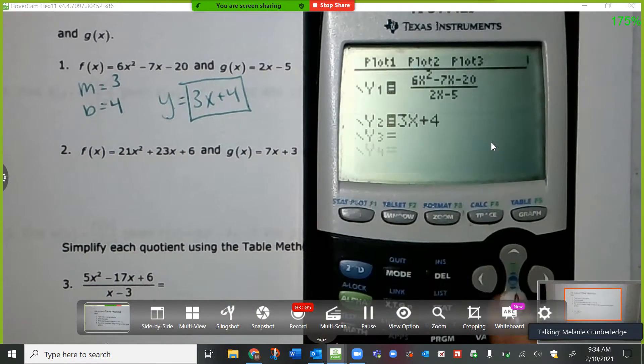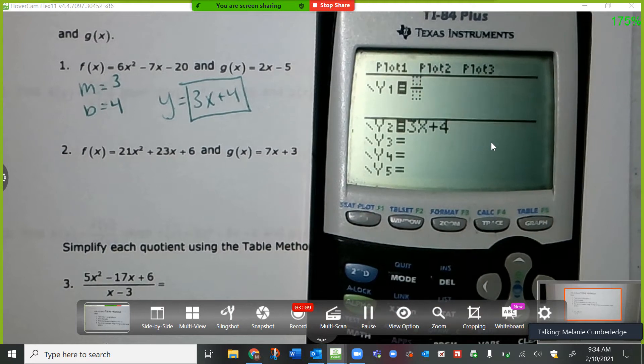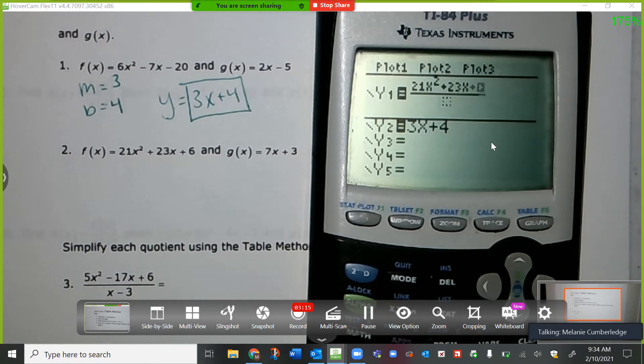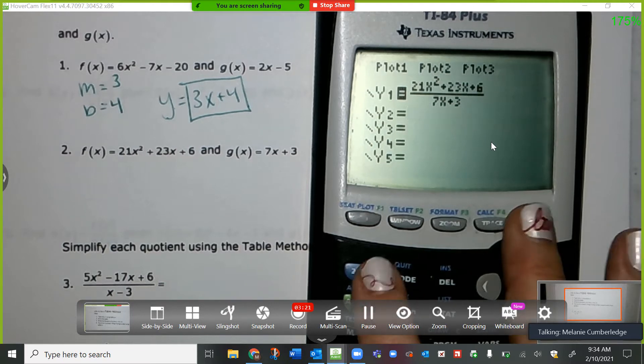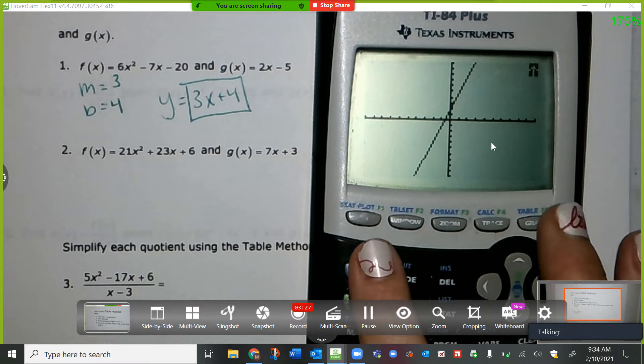Okay, so let's try this one. Alpha y equals enter does the fraction. 21x squared plus 23x plus 6 over 7x plus 3. I'm going to delete my other answer. I'm going to hit graph. It gives me a linear line. So I'm going to go to my table.